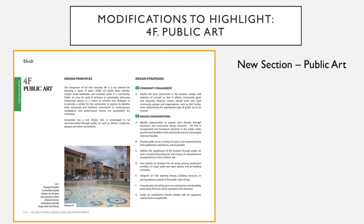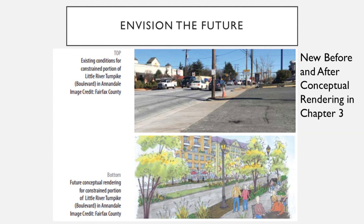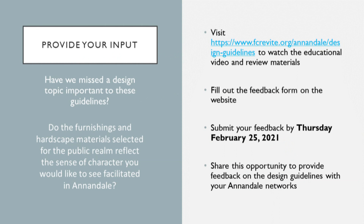Chapter 4, Public Realm Design, now has a new section on public art, providing more guidance to developers on how best to incorporate public art into the Annandale CBC as it transforms over time. Additionally, a new before and after conceptual rendering is offered in Chapter 3 to help the reader see the future streetscape changes envisioned for Little River Turnpike. In this presentation, we have sought to provide a high-level yet thorough overview of the modifications to the 2011 Annandale Urban Design Guidelines that have resulted in the Draft Volume 2, District Design Guidelines for Annandale.